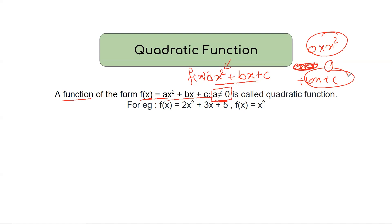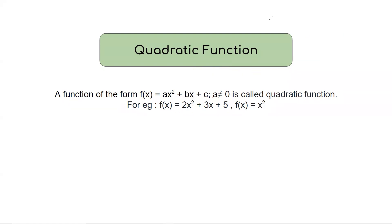This is an example: 2x squared plus 3x plus 5. Here x squared is degree 2. This is a quadratic function. This is an example of this topic — what is a quadratic function?